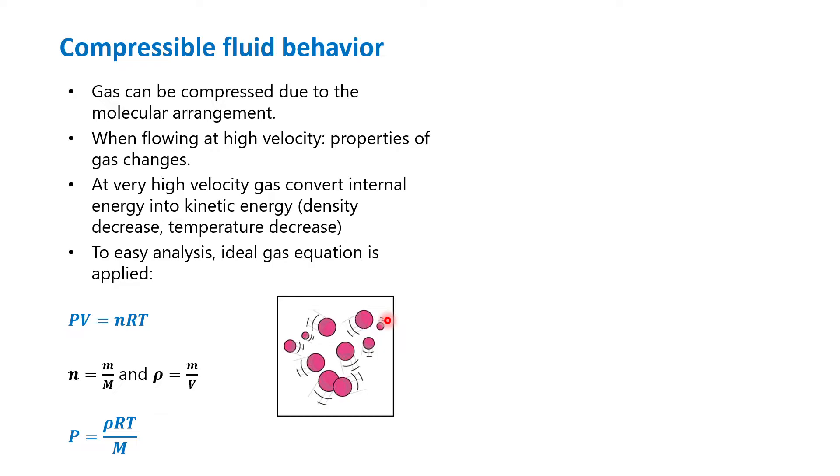When we compress the gas, we push them so that the relative distance becomes smaller. When we expand it, we allow space so that the relative distance between gases becomes further. When flowing at high velocity, the properties of gas change, and the relative distance between conditions can be predicted using the equation of state.